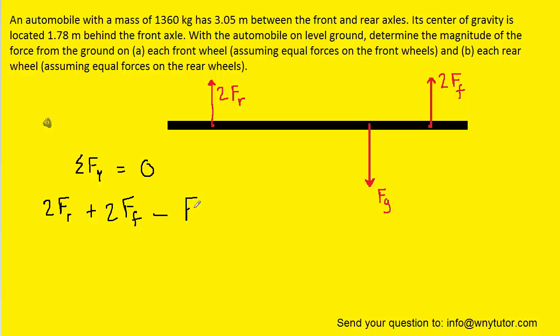And then the gravitational force is acting downward and is therefore negative. Now we can write the gravitational force as Fg or we can recall that Fg is equal to mg. So it might be better to substitute that and then we'll set it equal to zero. So this is an equation that we're going to hold on to.